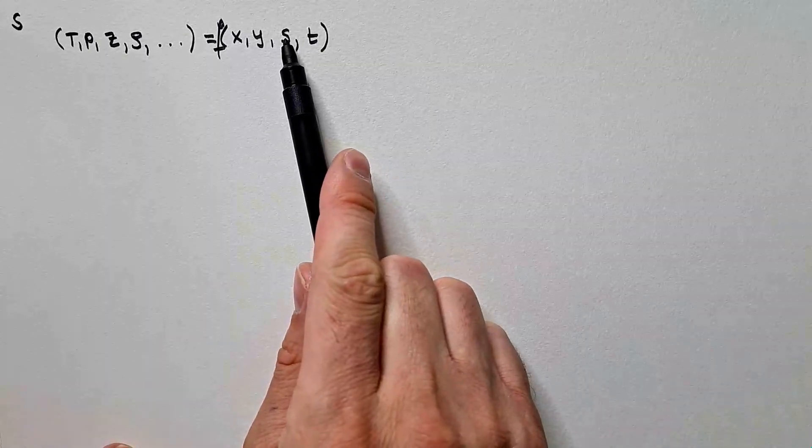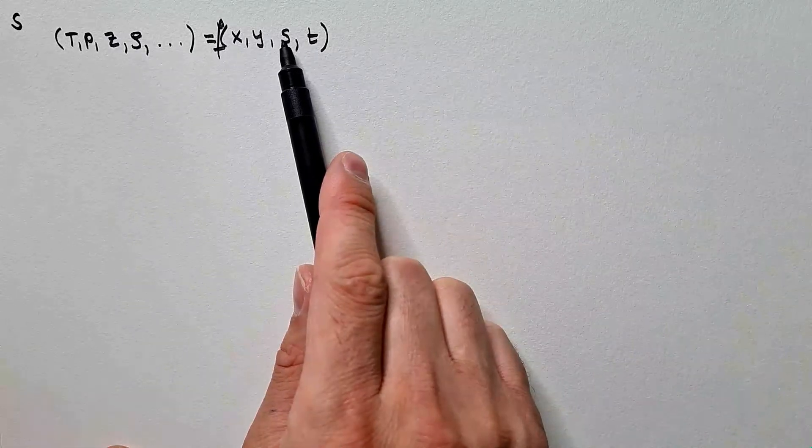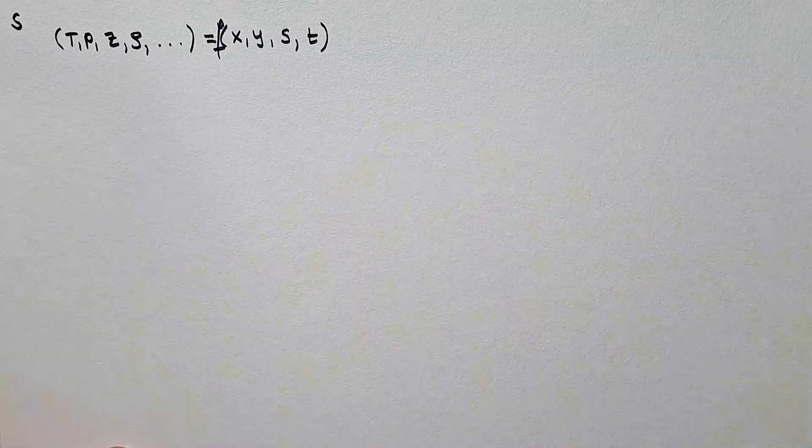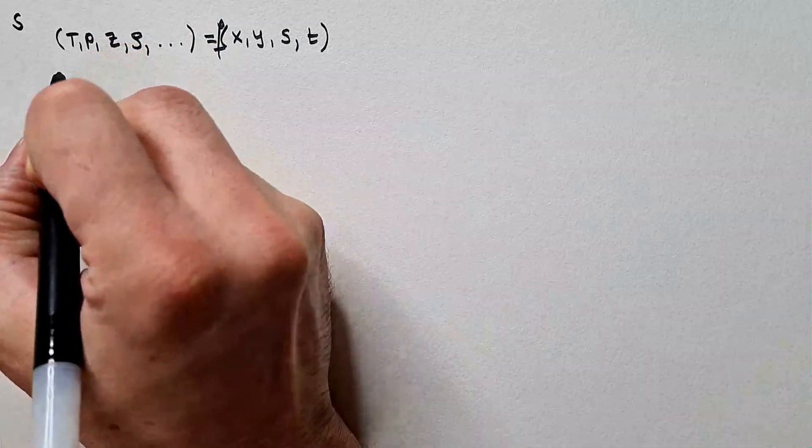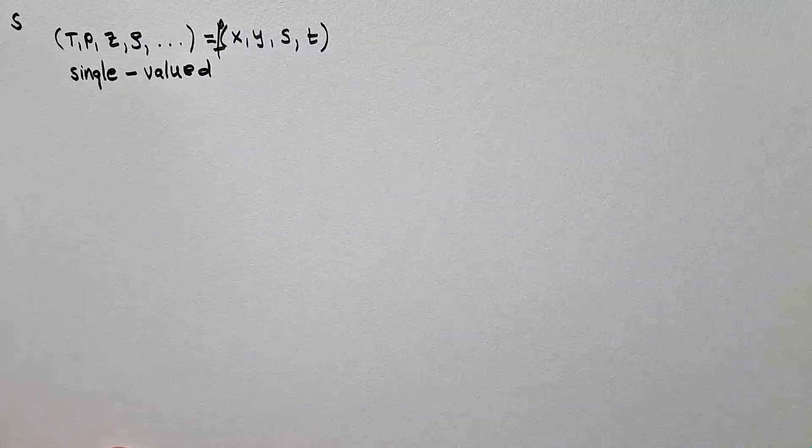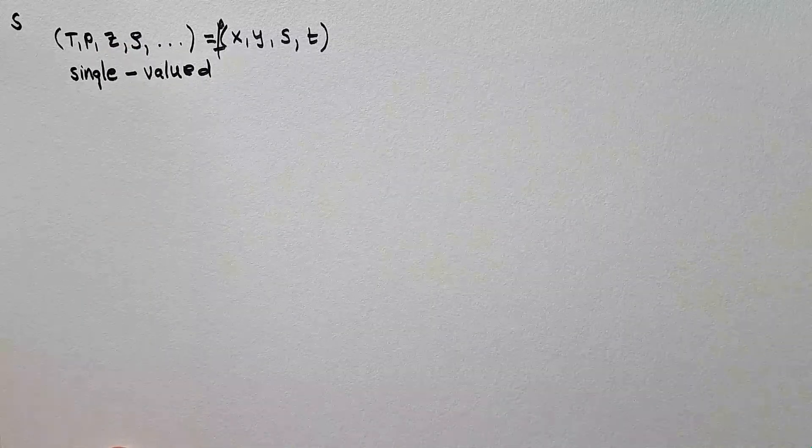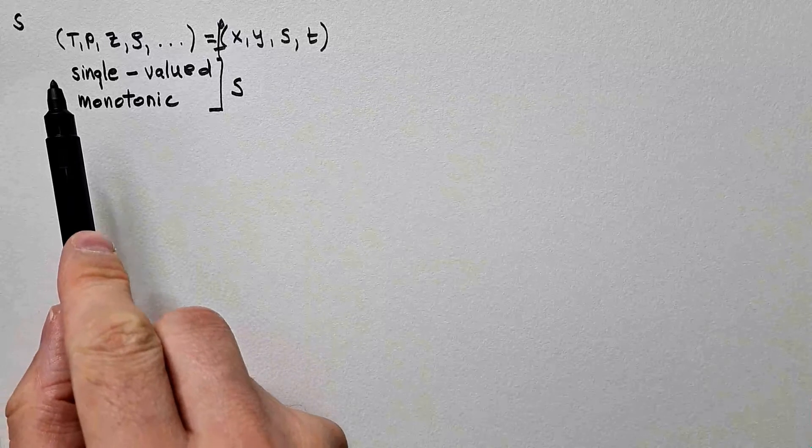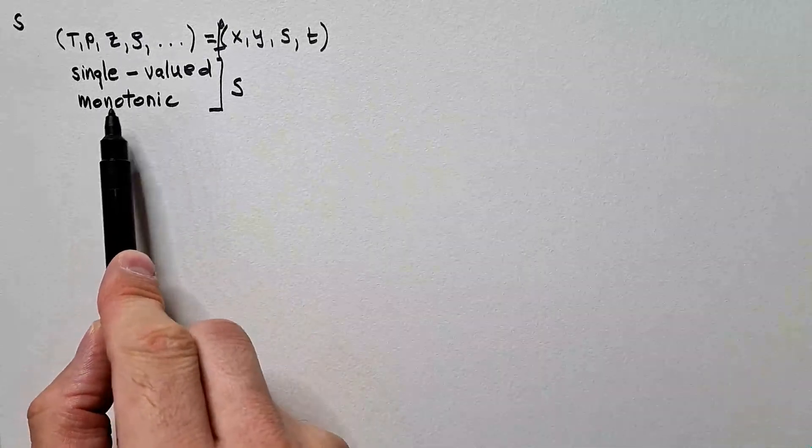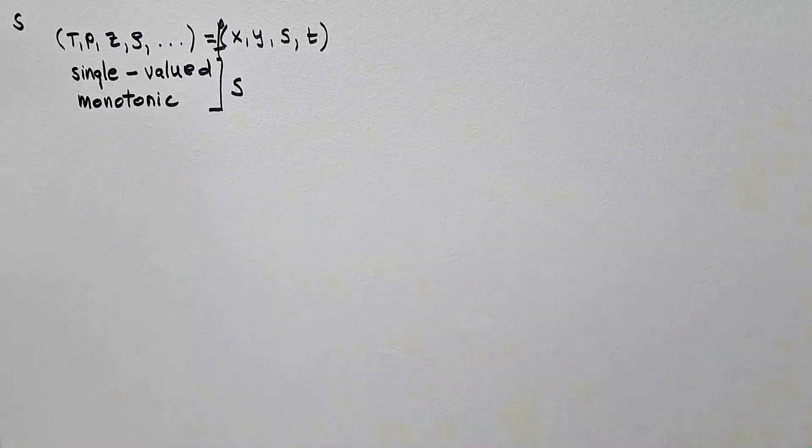Now, in order for this s to be vertical coordinate, it has to be single-valued and it has to be monotonic. What does it mean single-valued and what does it mean monotonic?